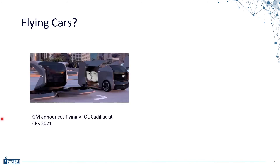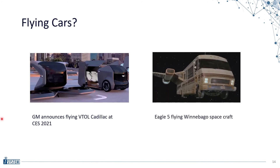This year at CES, GM announced an autonomous VTOL — which stands for Vertical Takeoff and Landing — a Cadillac. It's not really a flying car, so no road testing required. I have yet to see anything like the Eagle 5 from the cult classic Spaceballs though, but maybe once Elon sets up his Mars base, we'll hear about the Tesla flying RV.